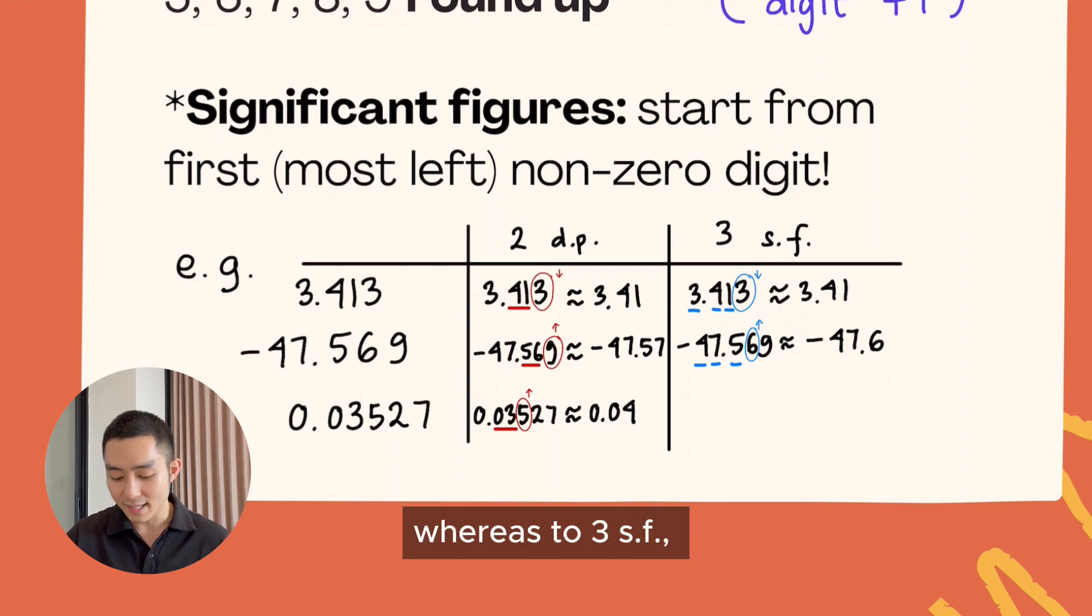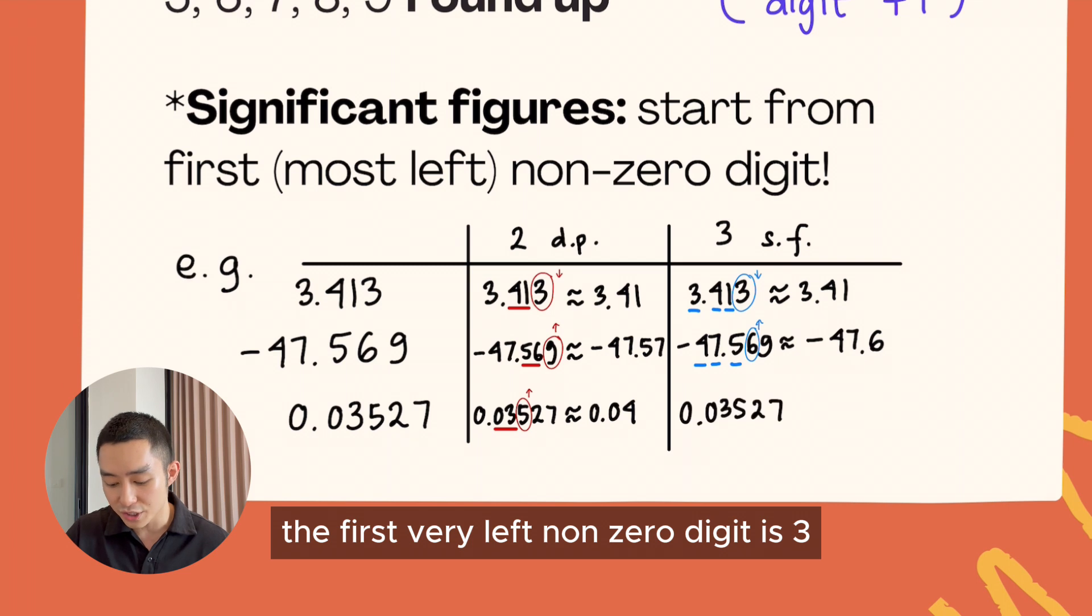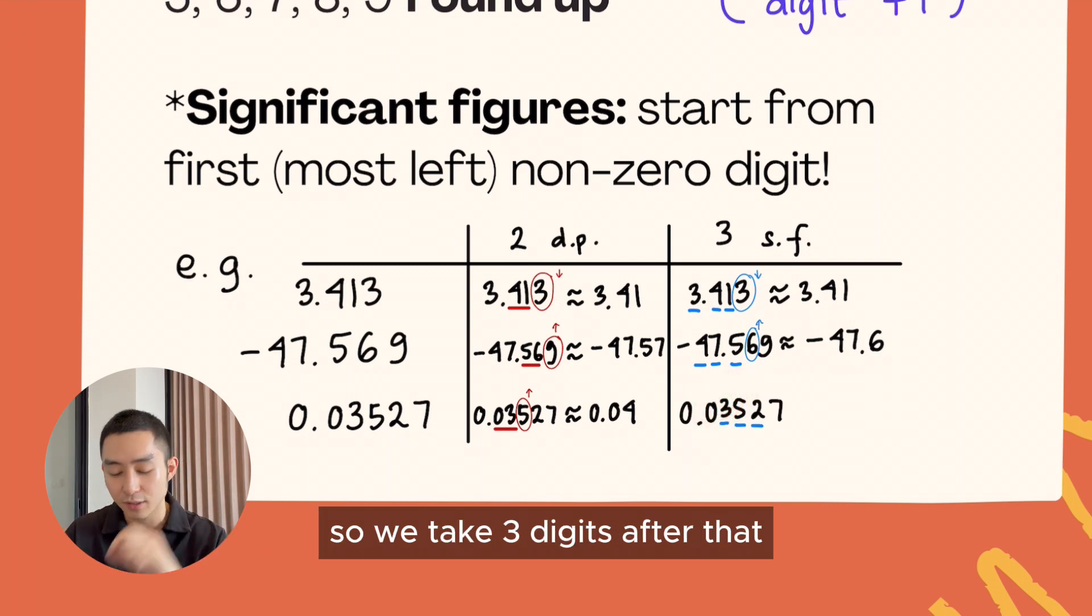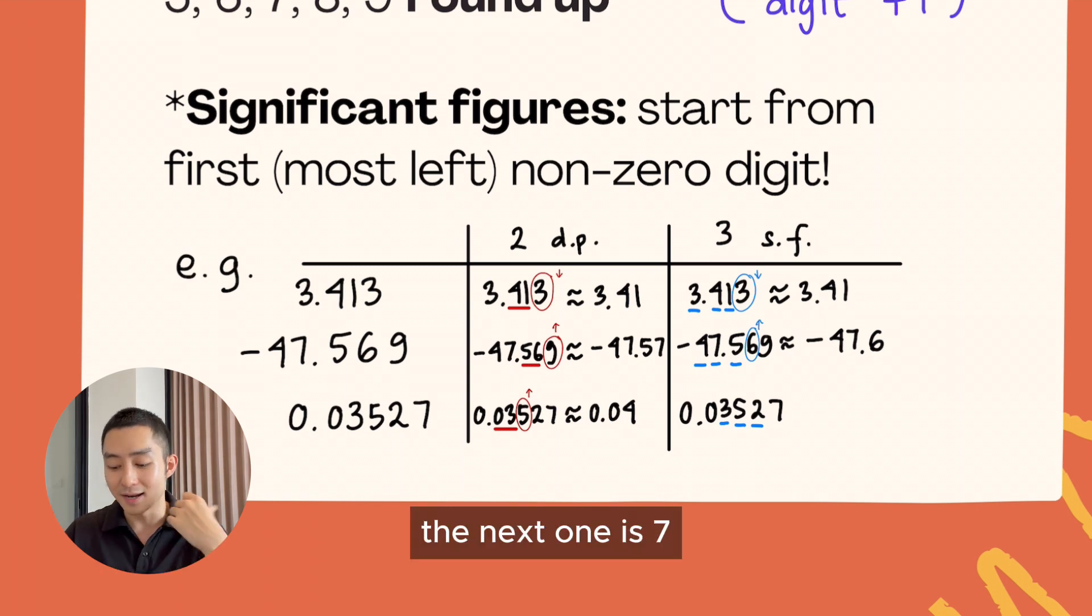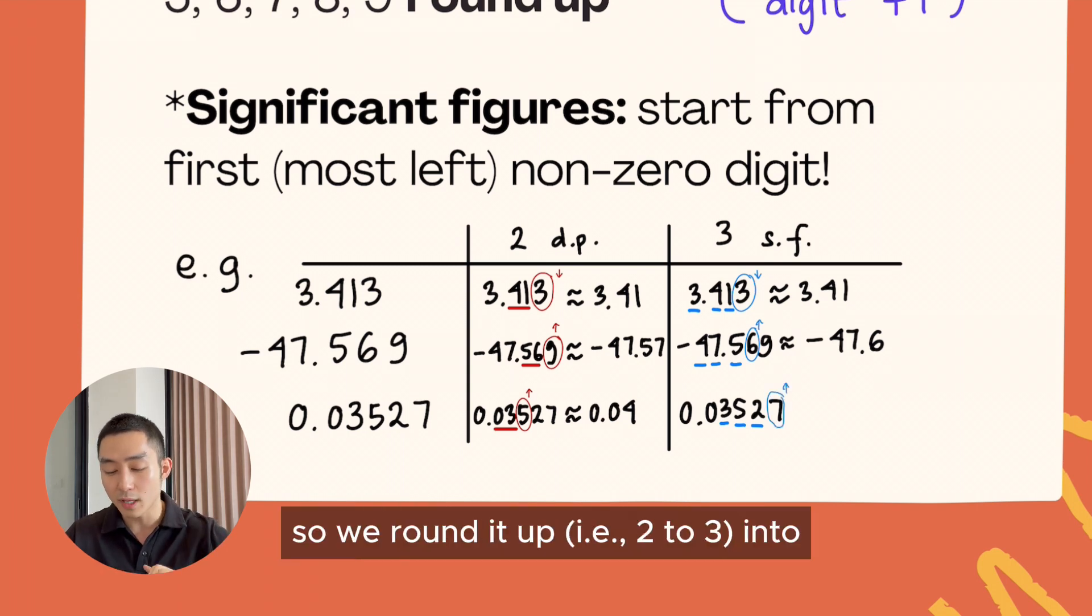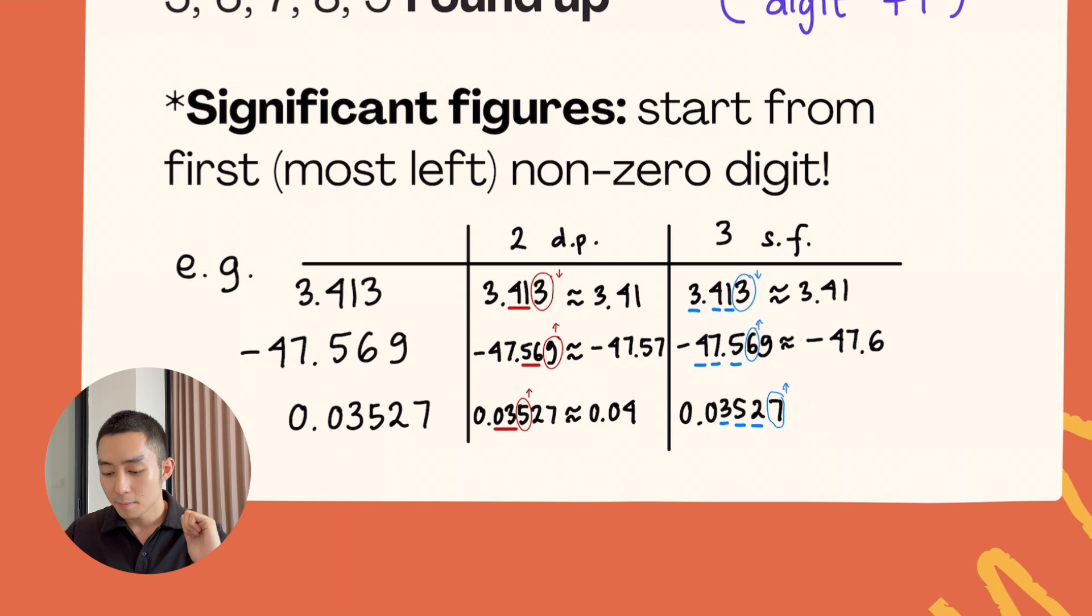Whereas to 3sf, the first very left non-zero digit is 3. So we take three digits after that: 3, 5, and 2. The next one is 7, so we round it up into 0.0353.